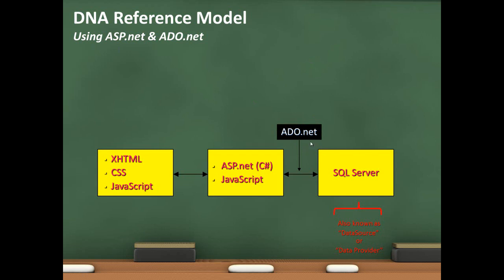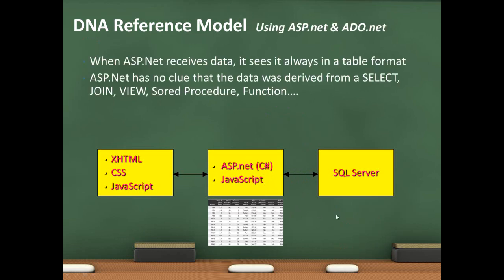When ASP.NET receives data, it is always in a table format. Any time data is transmitted back and forth, it's always going to be in a table format. That table could have multiple rows and columns, or it could be a single cell returned back — but either way, it's always going to be shaped as a rectangle. It doesn't matter where the data is coming from; it has to be in that format.